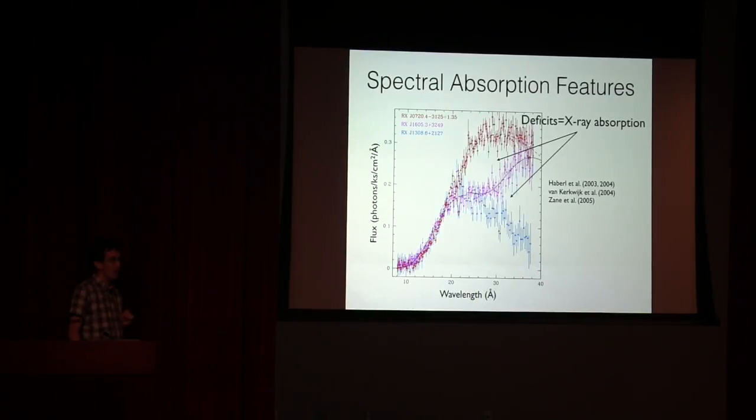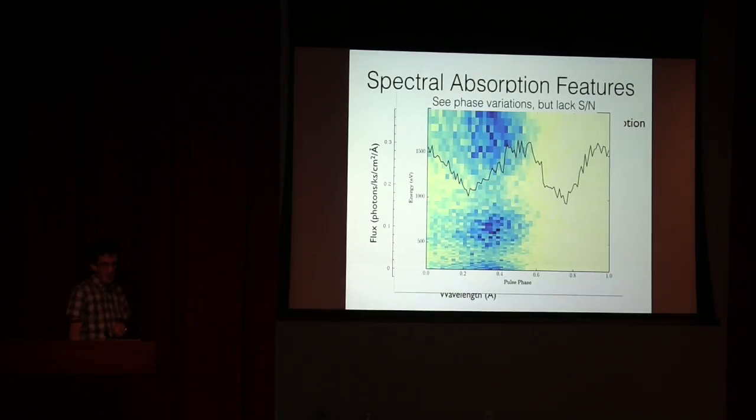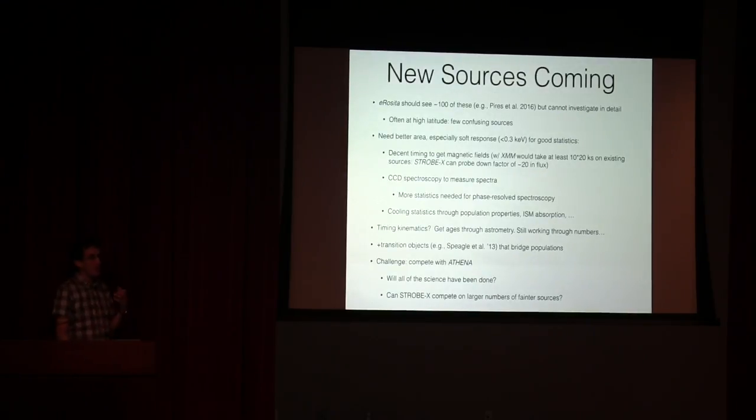Looking at these as they come out of ongoing radio pulsar surveys, pulsar surveys are notoriously difficult to find long period objects, they often get confused with interference. But they are coming out, and as we find more of them, soft x-ray observations are going to help us understand their properties and relate to these other sub-populations.